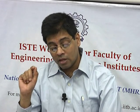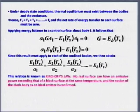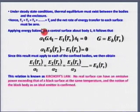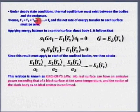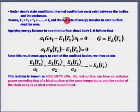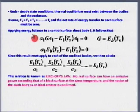Thermal equilibrium must exist between the bodies and the enclosures and between the bodies themselves. Everything is at the same uniform temperature. Hence T_1 = T_2 = T_3 = T_s, and the net rate of energy transfer to each surface must equal zero. That is thermal equilibrium — only when there is a delta T is there heat transfer. When everything is at the same temperature, there is no energy transfer between objects.